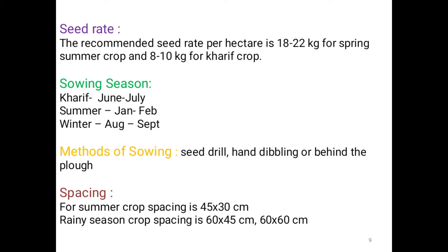Sowing seasons: Kharif — June to July; Summer — January to February; Winter — August to September. Methods of sowing include seed drill, hand dibbling, or behind the plow. Spacing for summer crop is 45 x 30 cm, and for rainy season, 60 x 45 cm or 60 x 60 cm.